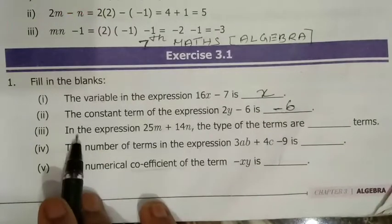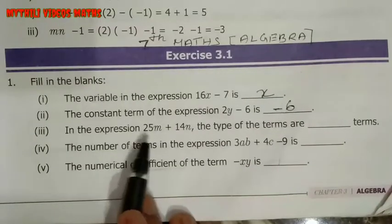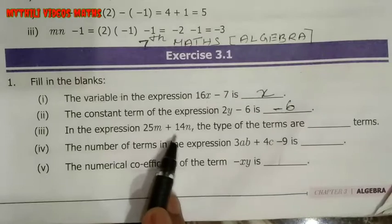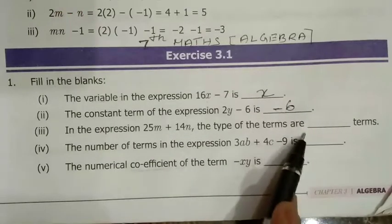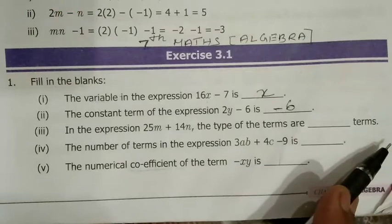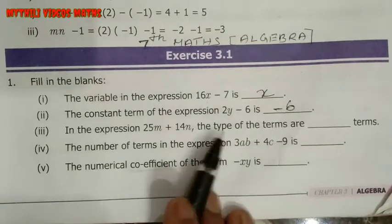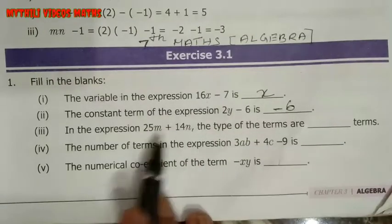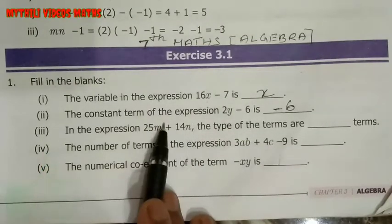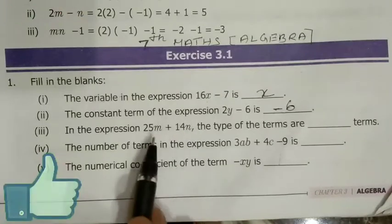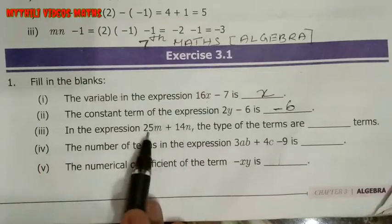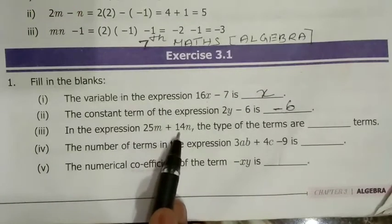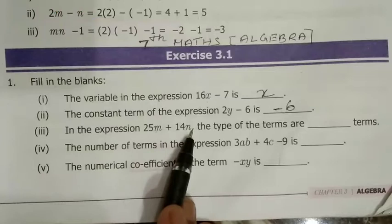And then third one: in the expression 25m plus 14n, the type of the terms is dash. So this is the algebraic expression. In the expression, these are the terms — two terms are there: 25m and 14n.